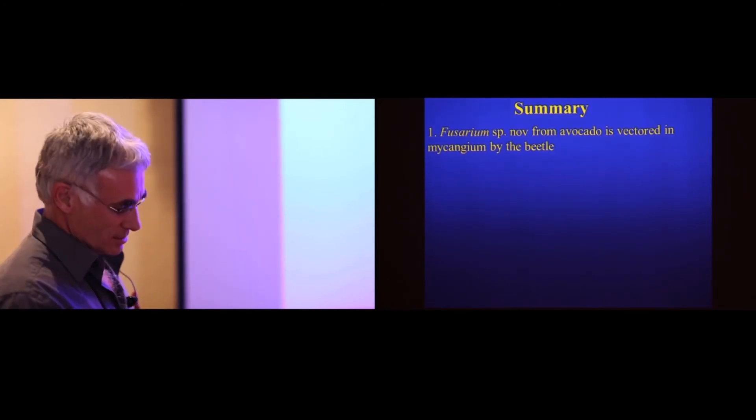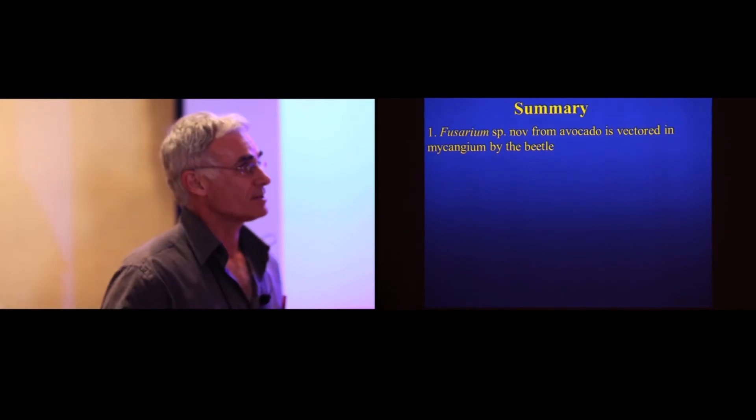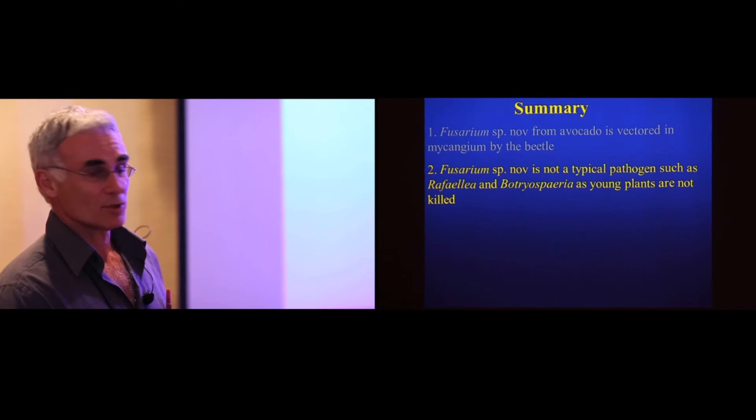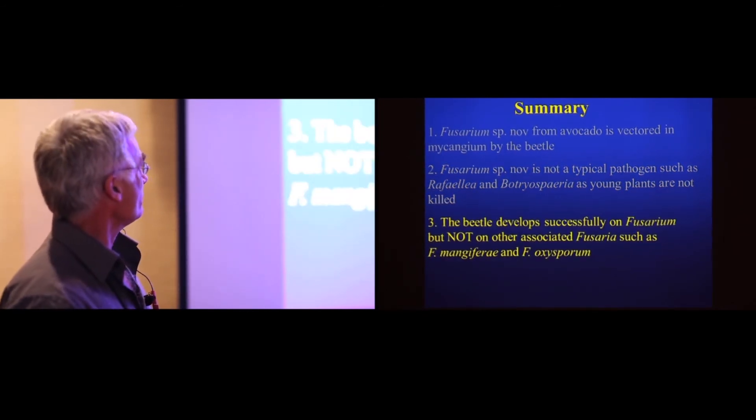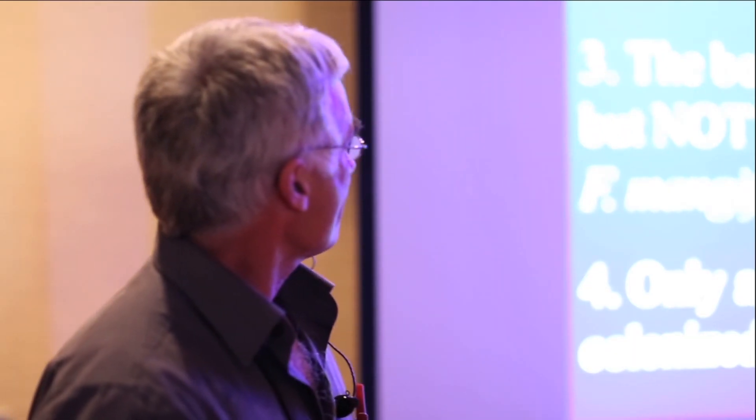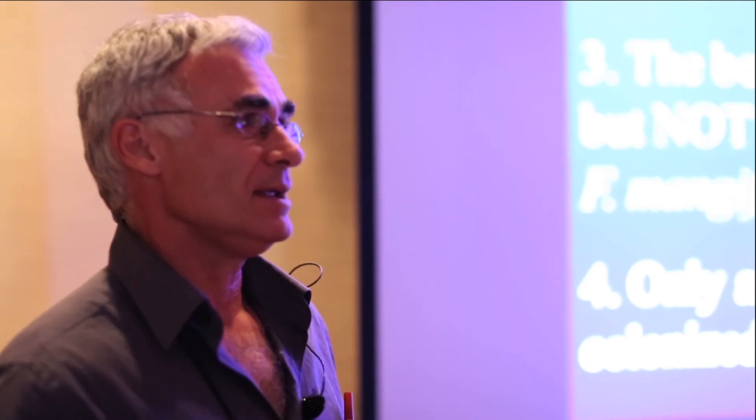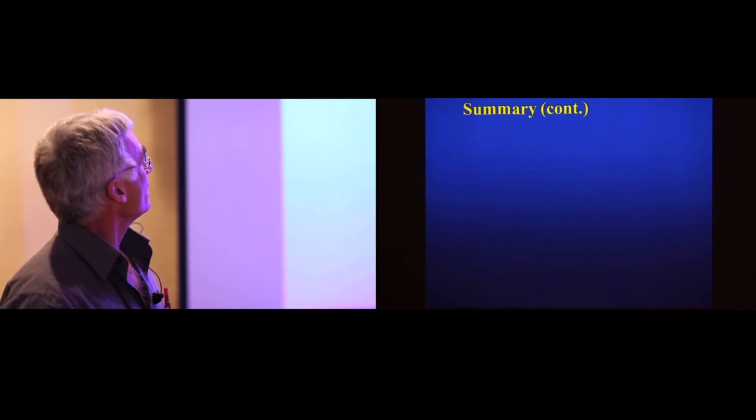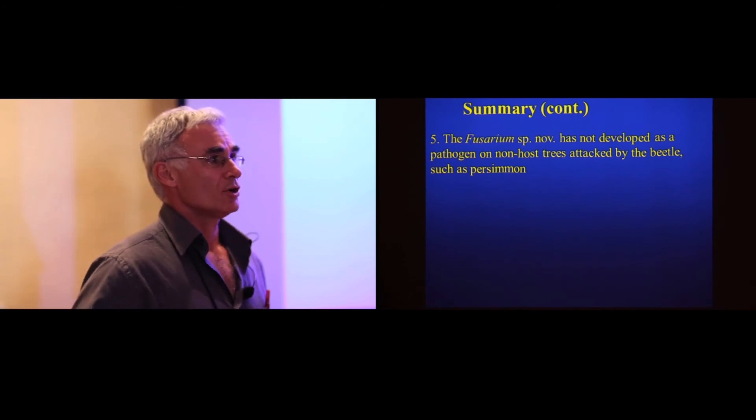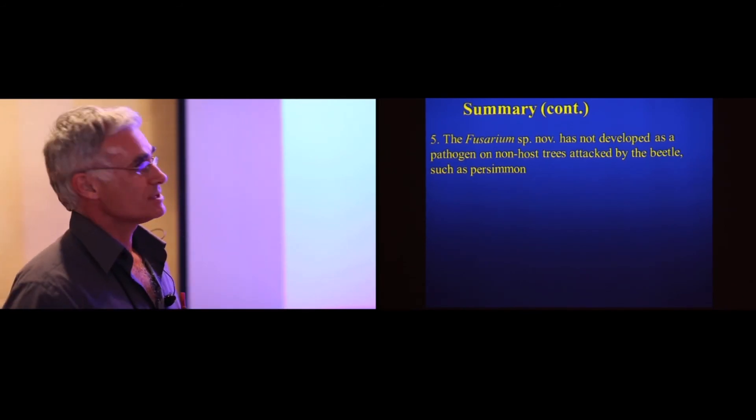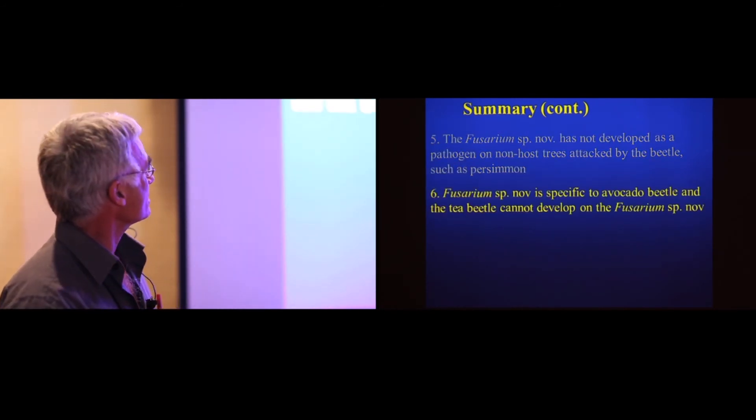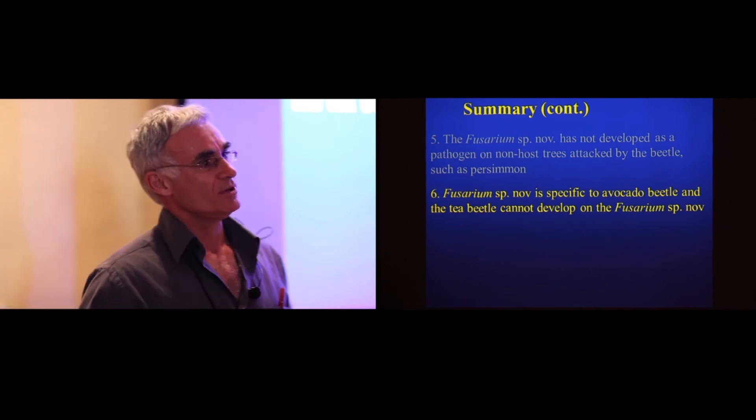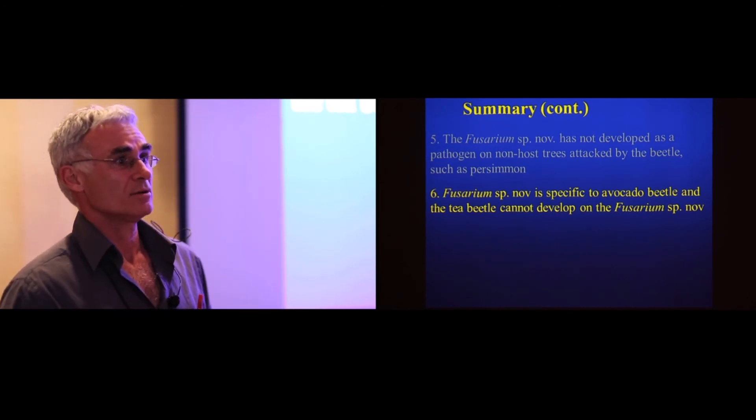So just to summarize, in general, we can say that our Fusarium from avocado is vectored in the mycangium. It's not a typical pathogen as compared to Rafalia and Botryosphaeria. Developed successfully on Fusarium, but not on other associated Fusarium. It appears to be clonal. We don't find any differentiation. Everything is uniform as far as banding patterns go and does not develop on non-host trees. There are non-host trees which do not show symptoms. And the Fusarium from avocado is specific to the avocado beetle. As we've seen that the TB tool, for instance, cannot develop on our source of Fusarium.